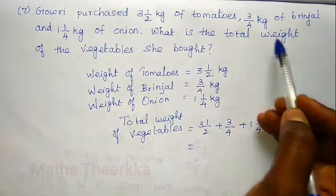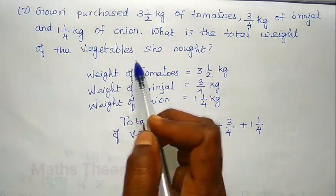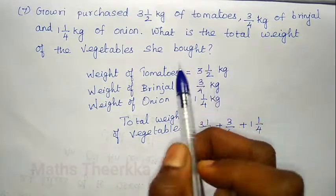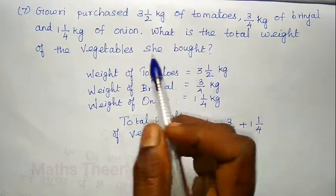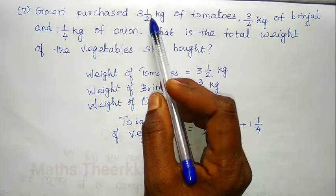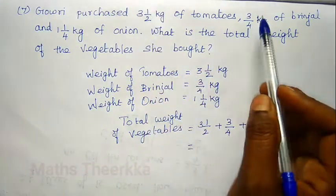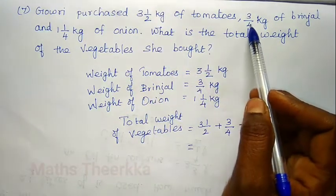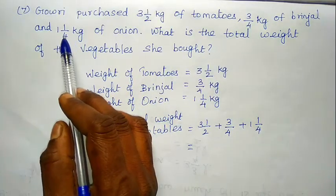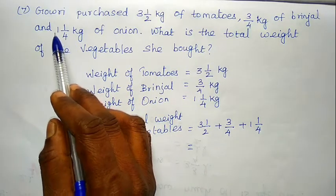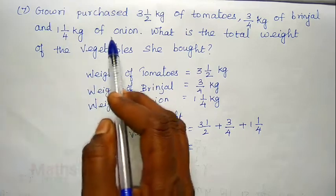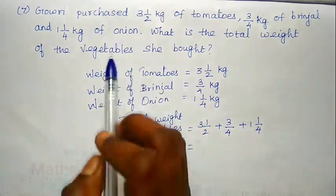What is the total weight of the vegetables she bought? Gauri purchased tomatoes 3.5 kg, brinjal 3.5 kg, and onion 1 kg.